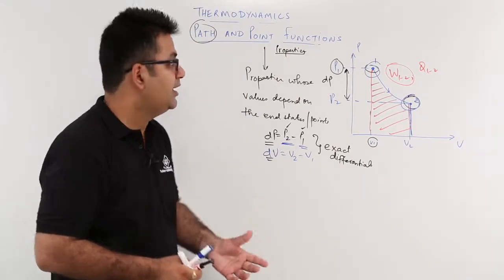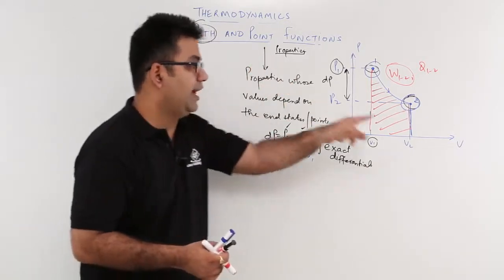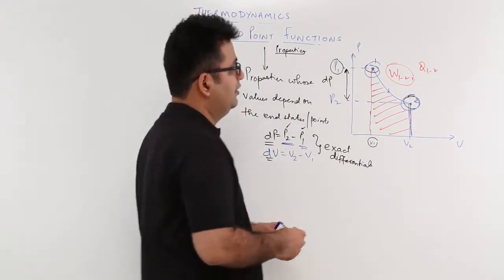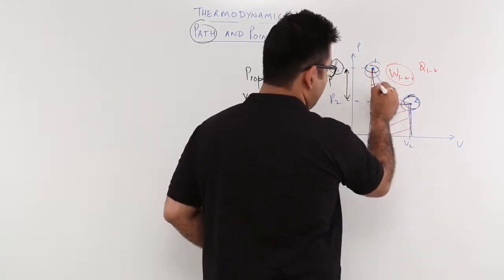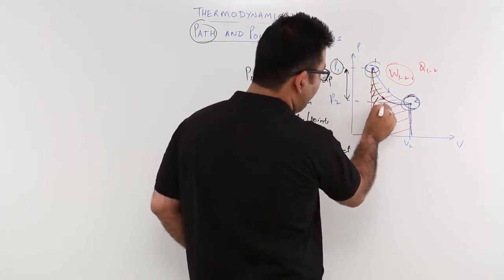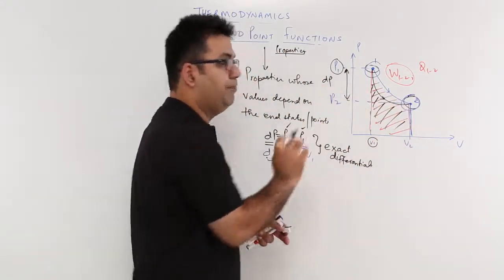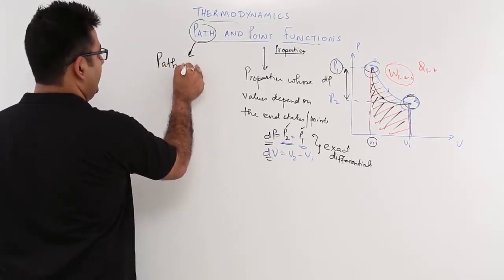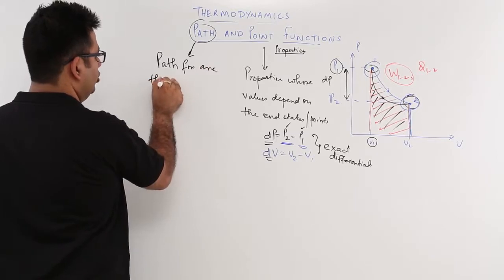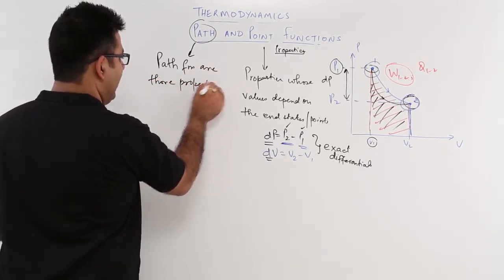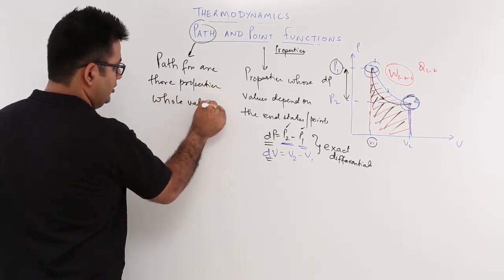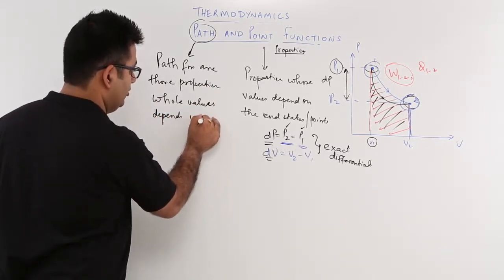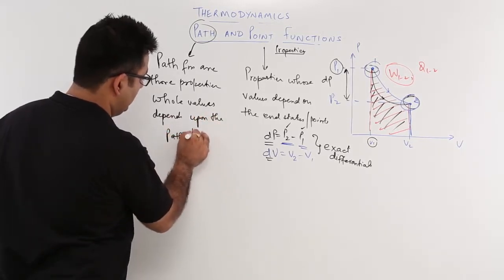The amount of work — which is the area — depends upon the path that the system takes to undergo that process. If the path had been different, for example the black line path, then the area would have been different. So the amount of work depends upon the kind of path the system is taking. Path functions are those properties whose values depend upon the path taken by the system.